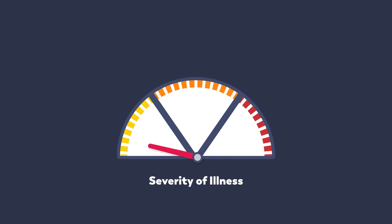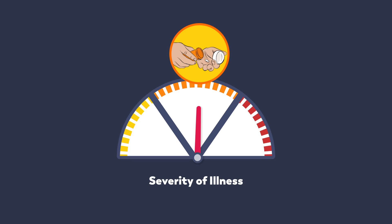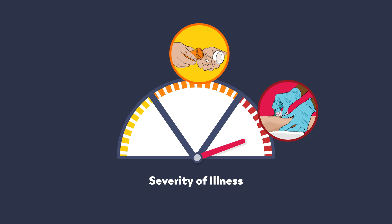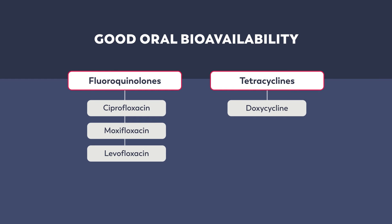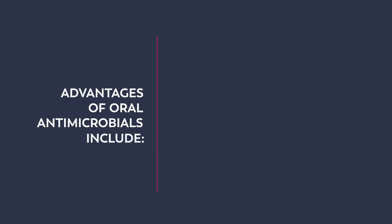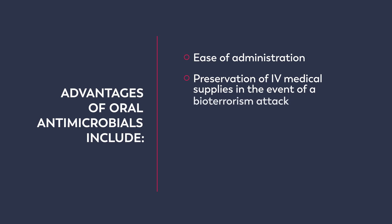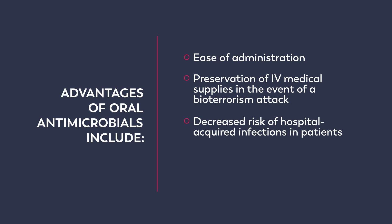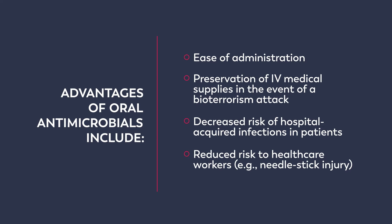Severity of illness can also be a consideration when treating patients with plague. Consider using oral antimicrobials, if possible, for patients with mild to moderate disease. In patients with severe disease or for patients unable to tolerate oral medications, intravenous antimicrobials are appropriate. Both fluoroquinolones and tetracyclines have good oral bioavailability. Additional advantages of oral antimicrobials include ease of administration, preservation of IV medical supplies in the event of a bioterrorism attack, decreased risk of hospital-acquired infections in patients, and reduced risk to healthcare workers, for example by needle stick injury.